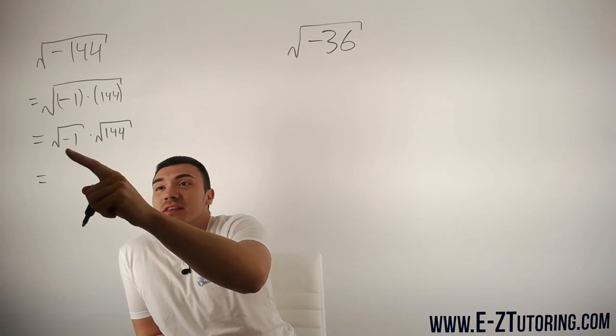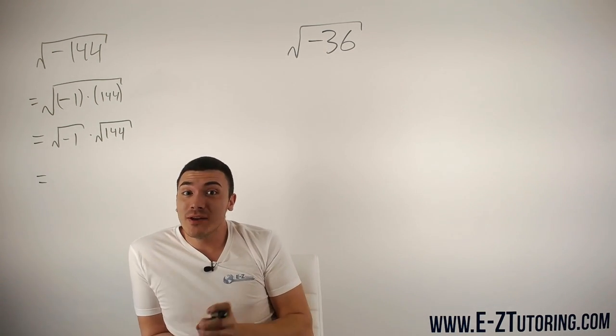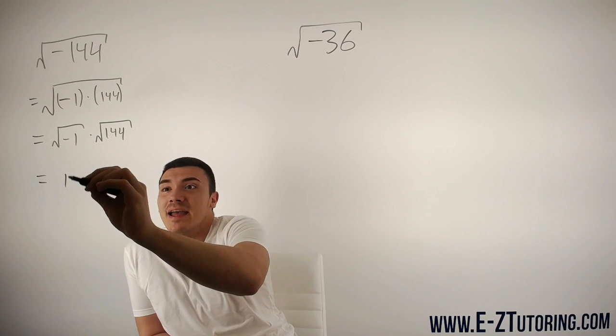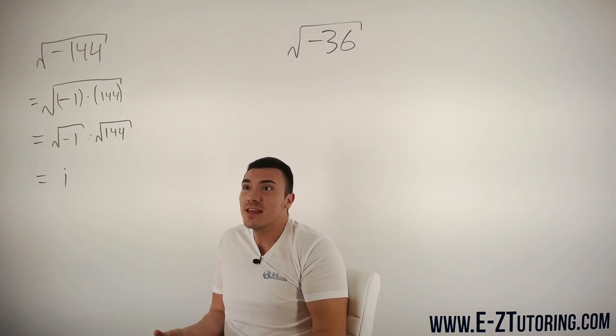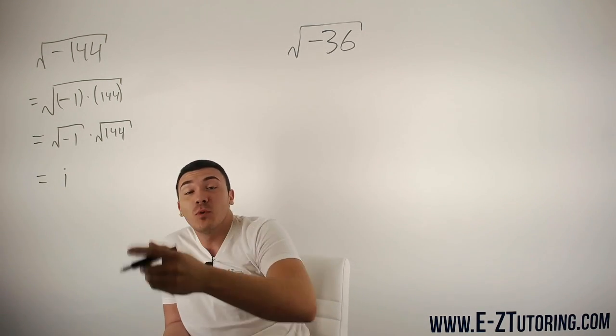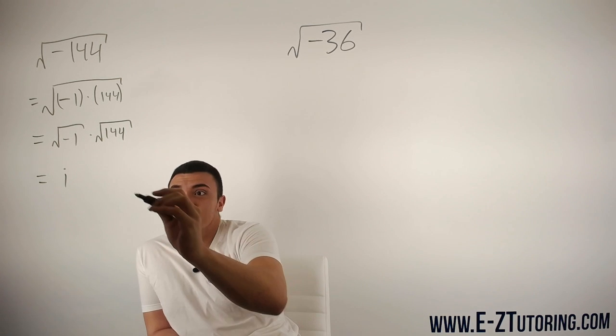The square root of negative one is i, an imaginary number that doesn't exist. The square root of 144 is just 12.